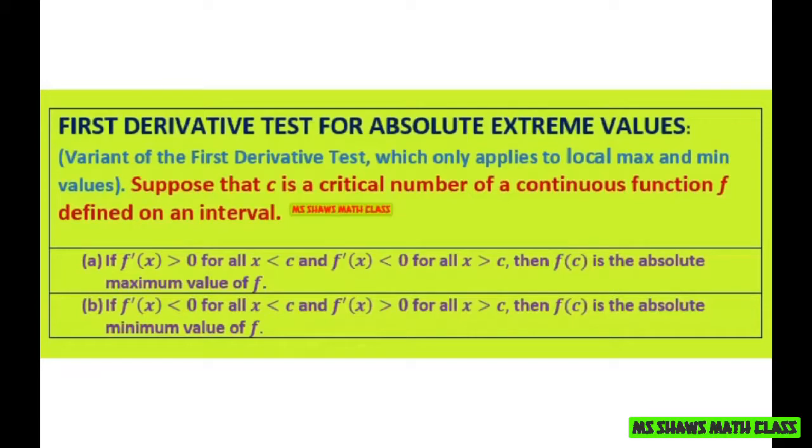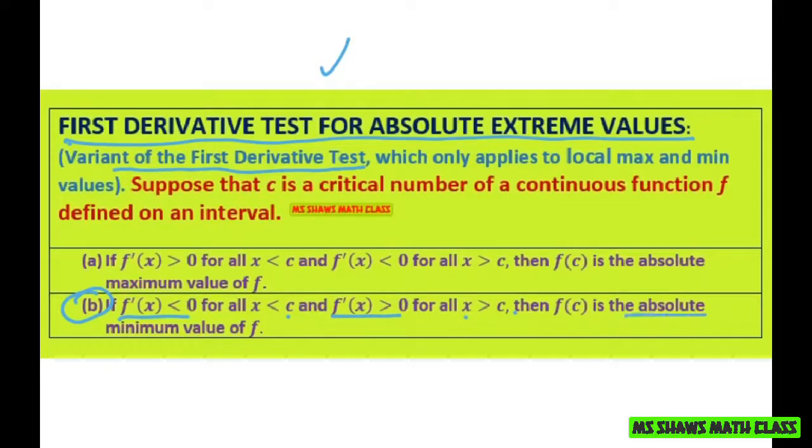And what I want to do is go ahead and add something. I wanted to add this real quick. There's a little jump. So this is what we used. The first derivative test for absolute extreme values. And what we noticed is that ours fell into category B. Now this is a variant of the first derivative test. So when our derivative was negative, our x was less than 2. When our derivative was positive, our x was greater than 2.